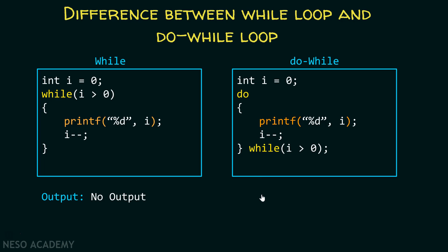Now you can easily spot the difference between a while loop and a do while loop. In the while loop case there is no output, because we first check the condition whether i is greater than 0 or not. In the do while loop case the output is 0, because we evaluate the printf statement and print the value 0 first, and after that we check the condition.